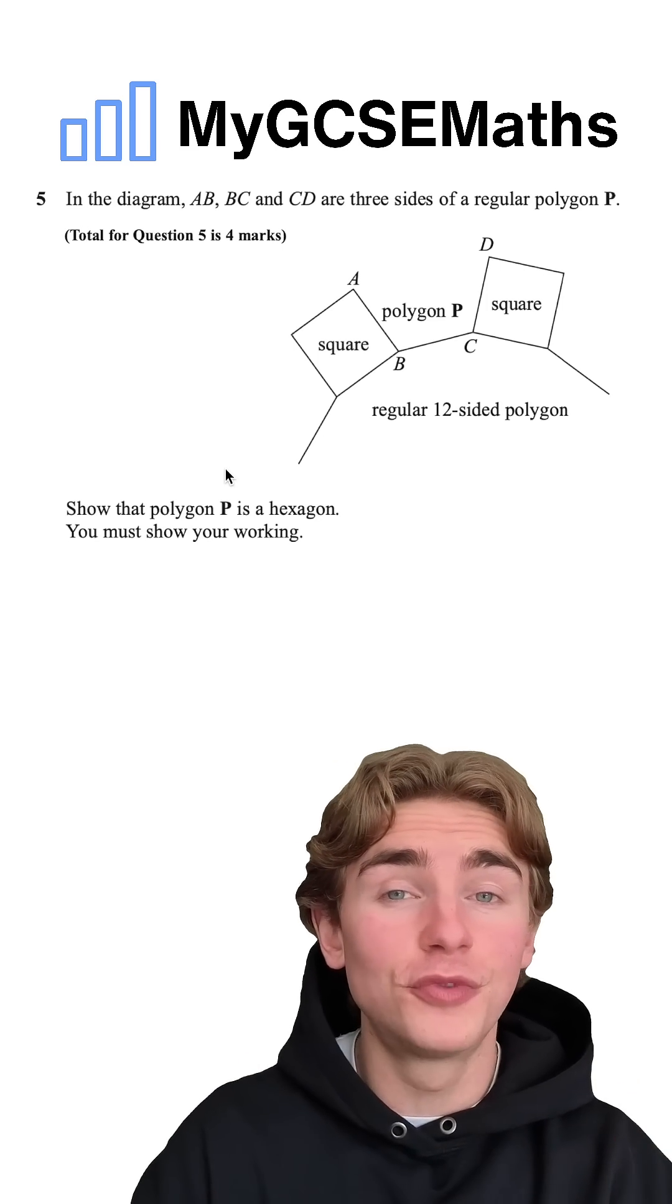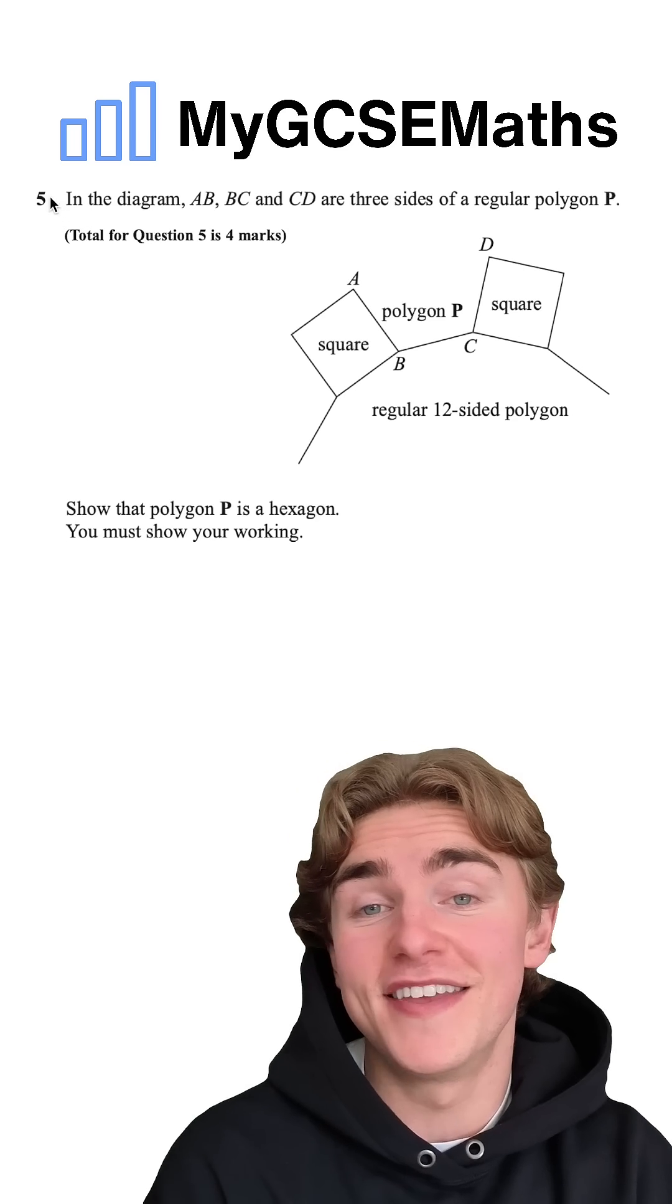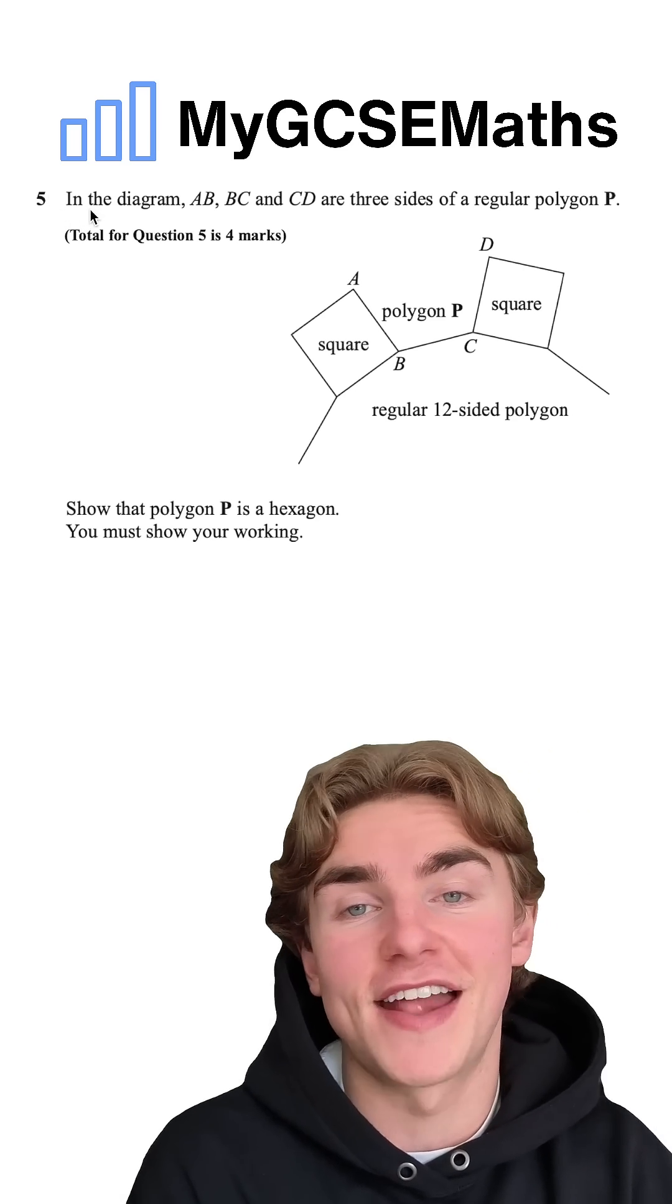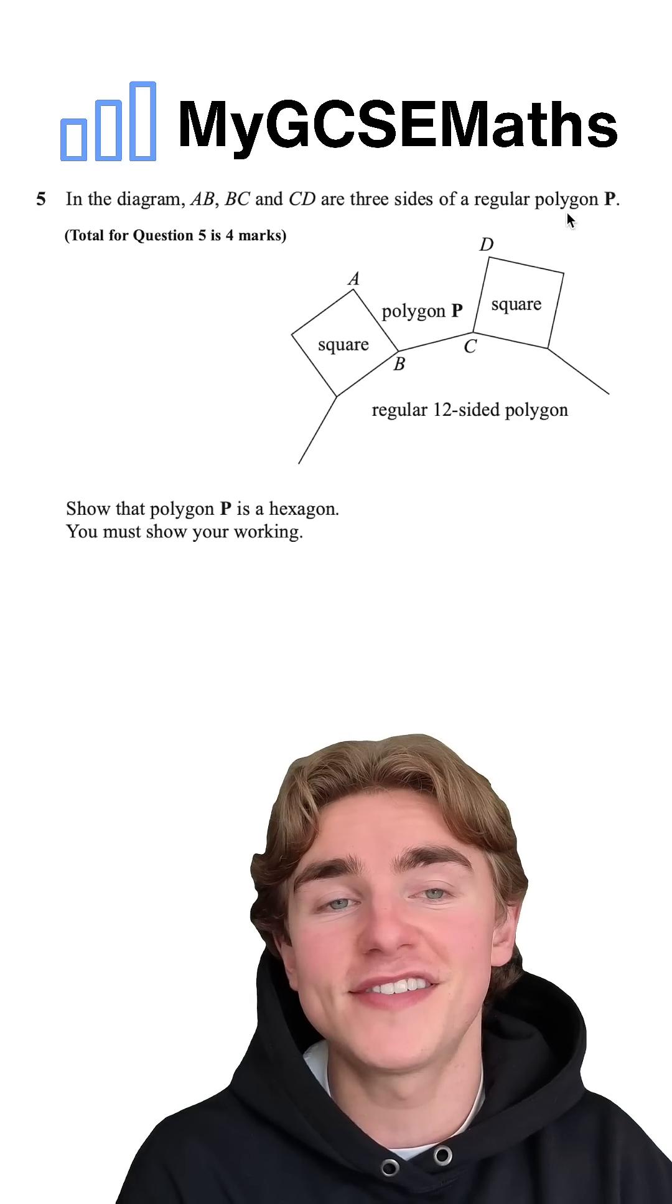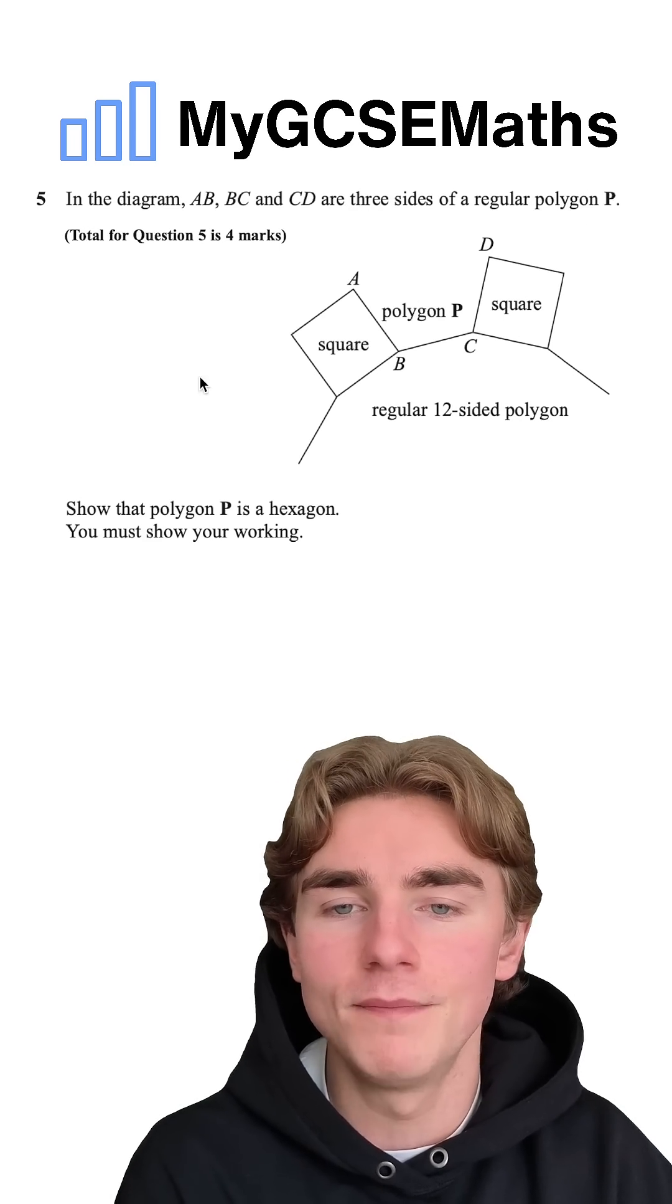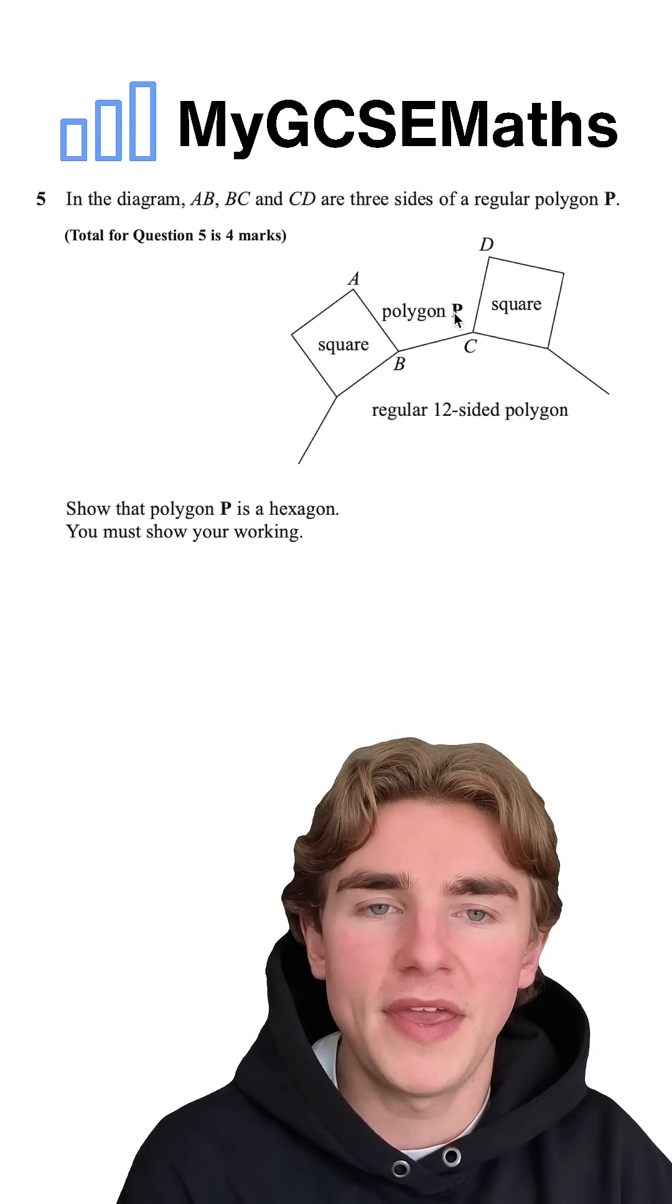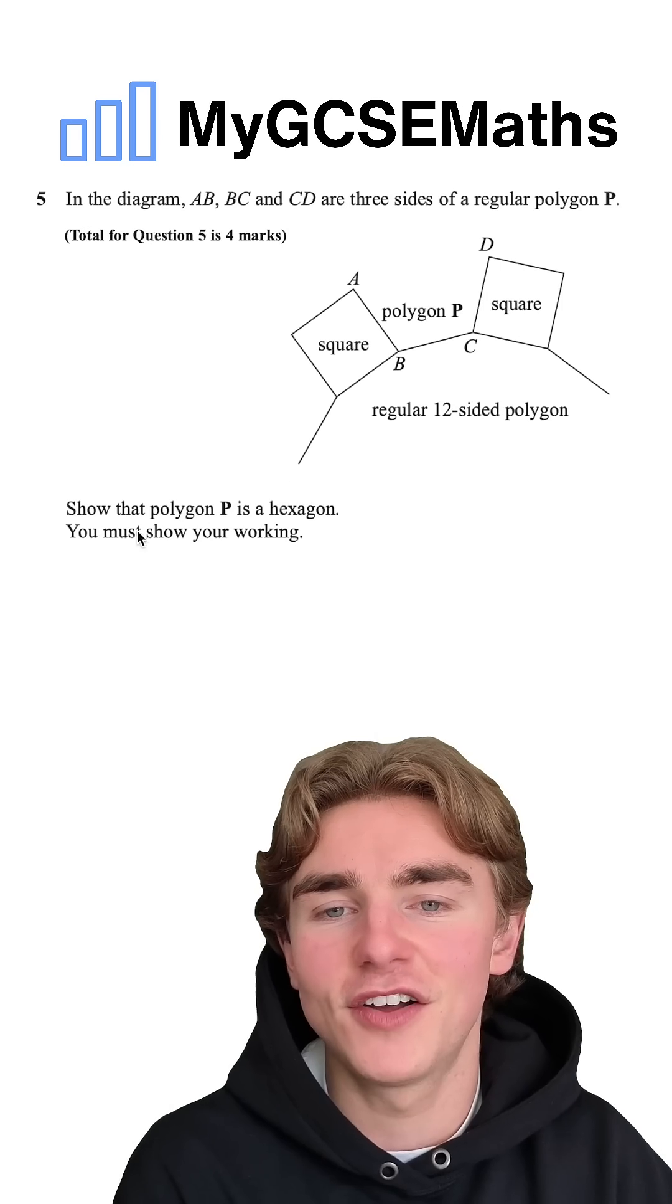I would say this is pretty brutal for a question five, but it did come up in a past exam. Let's have a look. The question says in the diagram AB, BC, and CD are three sides of a regular polygon P, and we're asked to show that polygon P, this one here, is a hexagon.